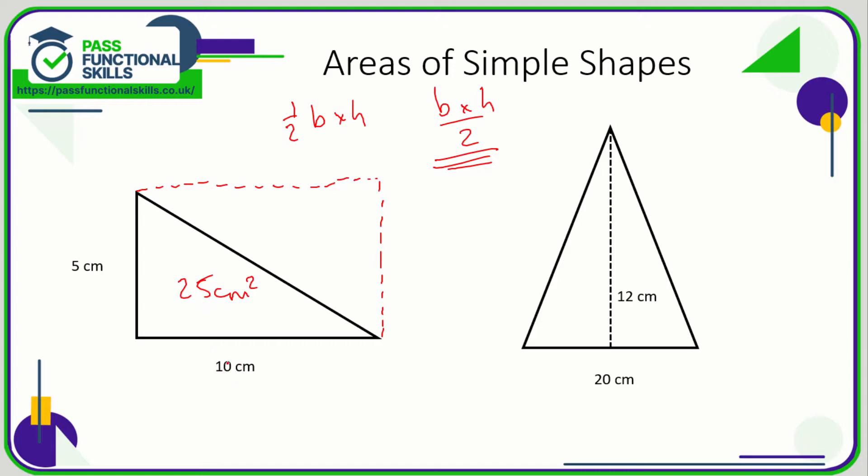Here's another example. The base is 20, the height is 12. 20 times 12 is 240, 240 divided by 2 is 120 square centimeters. Or half one of the sides: 10 times 12 equals 120, or 20 times 6 equals 120.